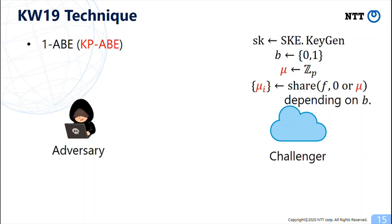Then, the adversary can adaptively make two queries once for each. One query is a query on a formula F and the adversary can obtain SKE ciphertexts for secret shares of mu or 0, which is decided depending on the challenge bit.